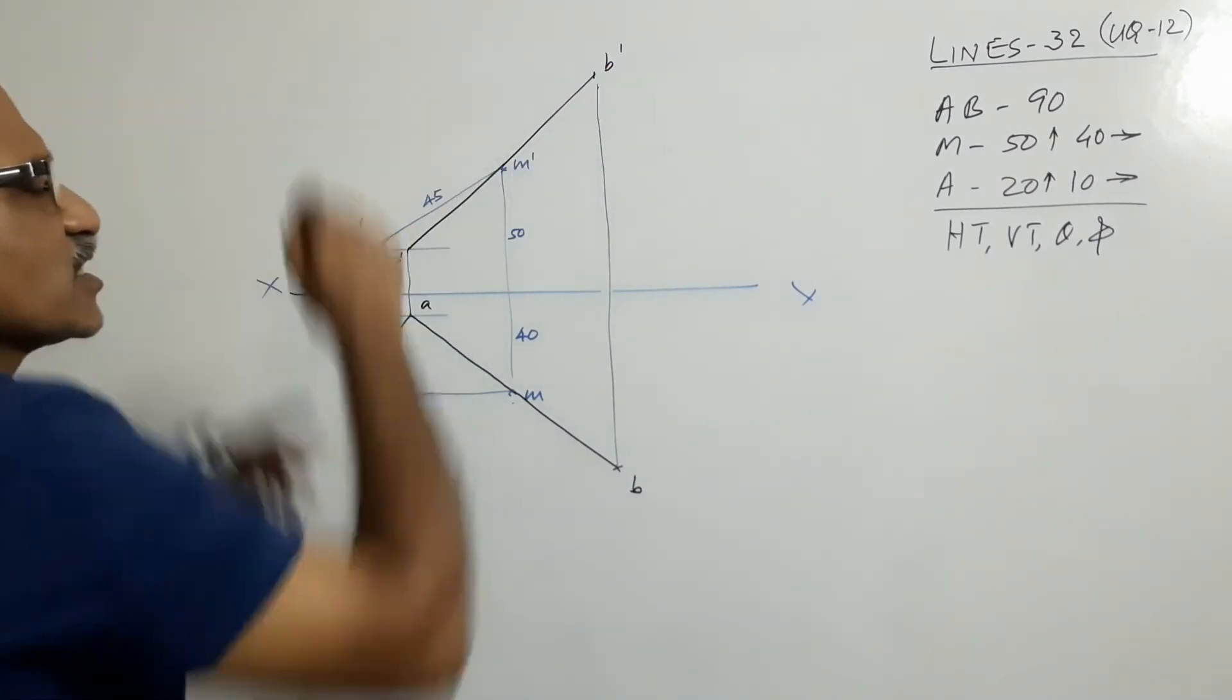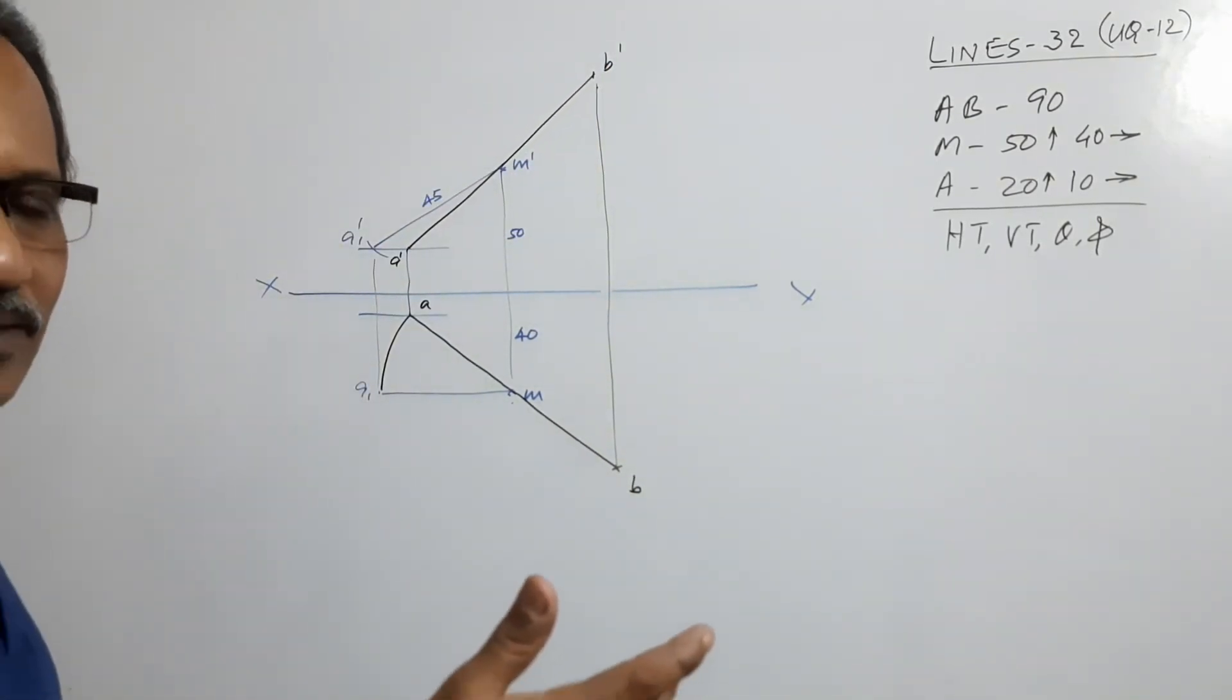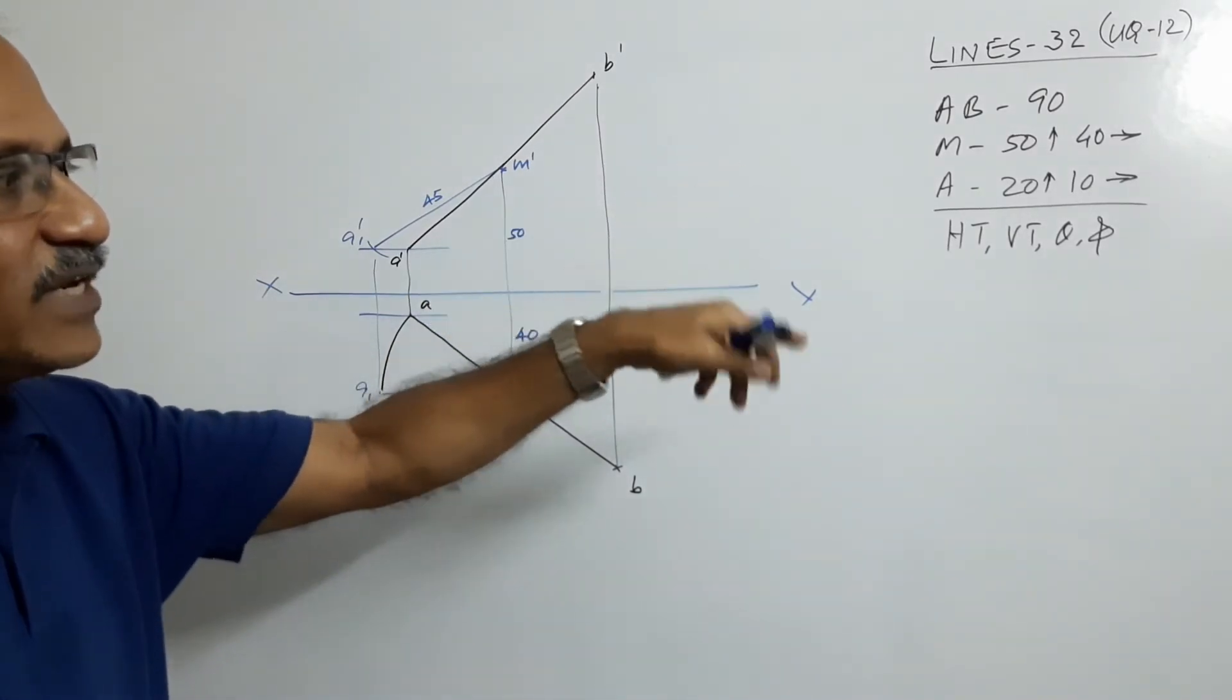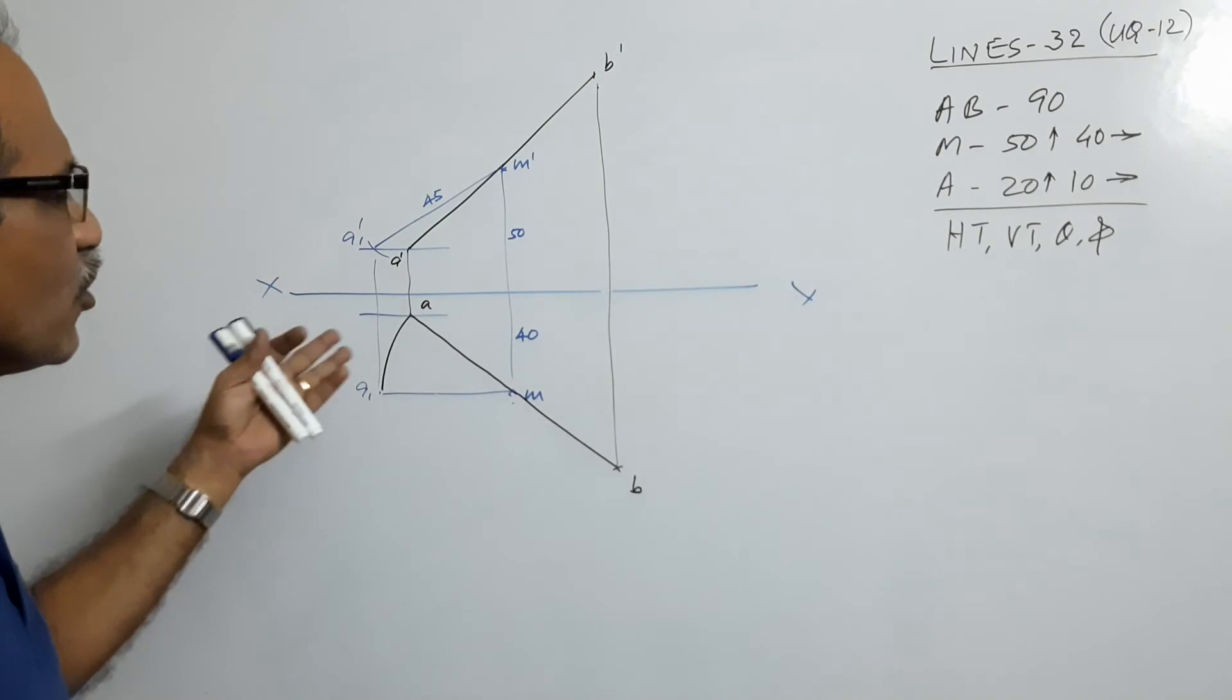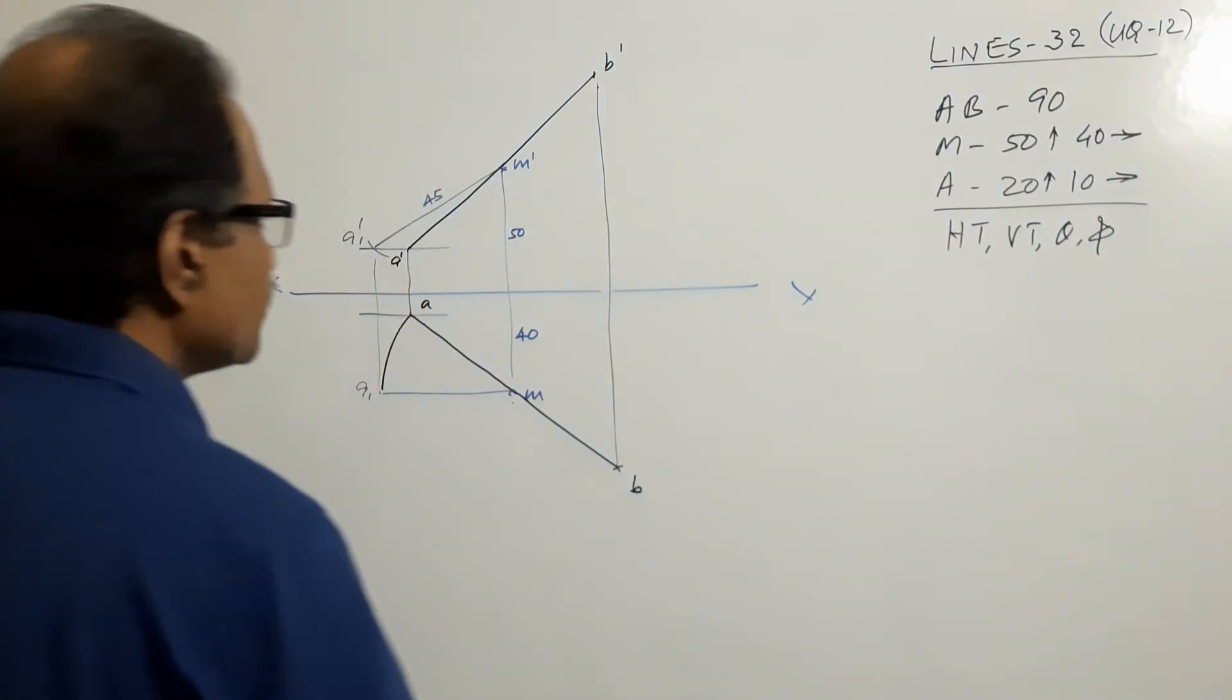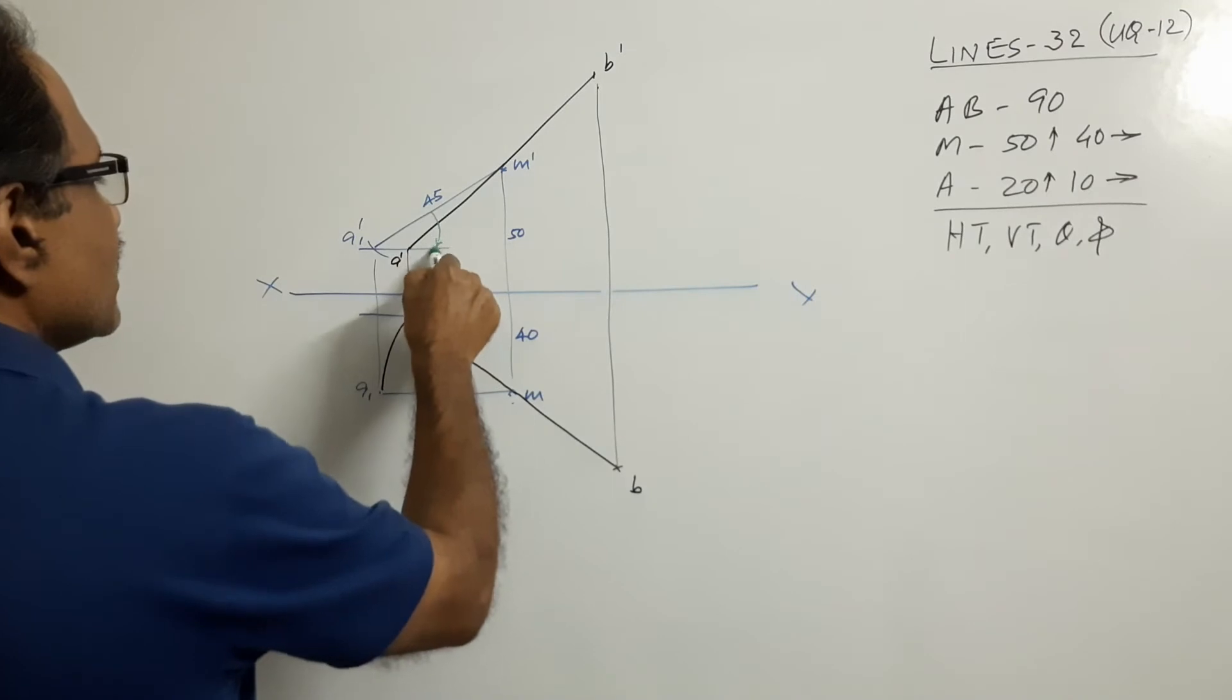You can go for trapezoidal construction on the elevation and the plan to get HT, VT, theta, and phi, or you have to draw them in this locus and use the conventional method. I will do that. This angle is theta.